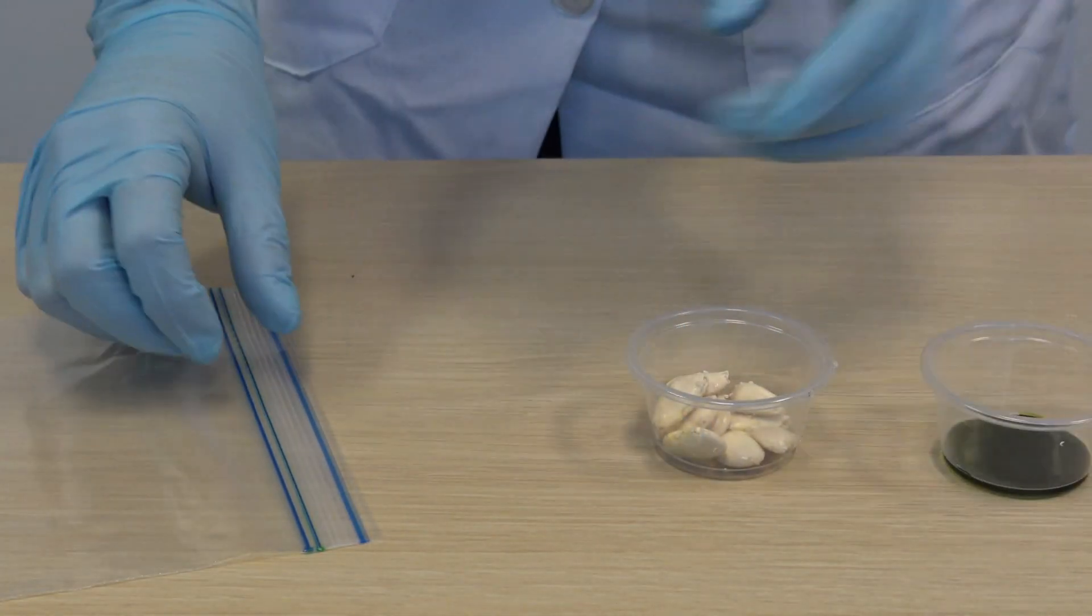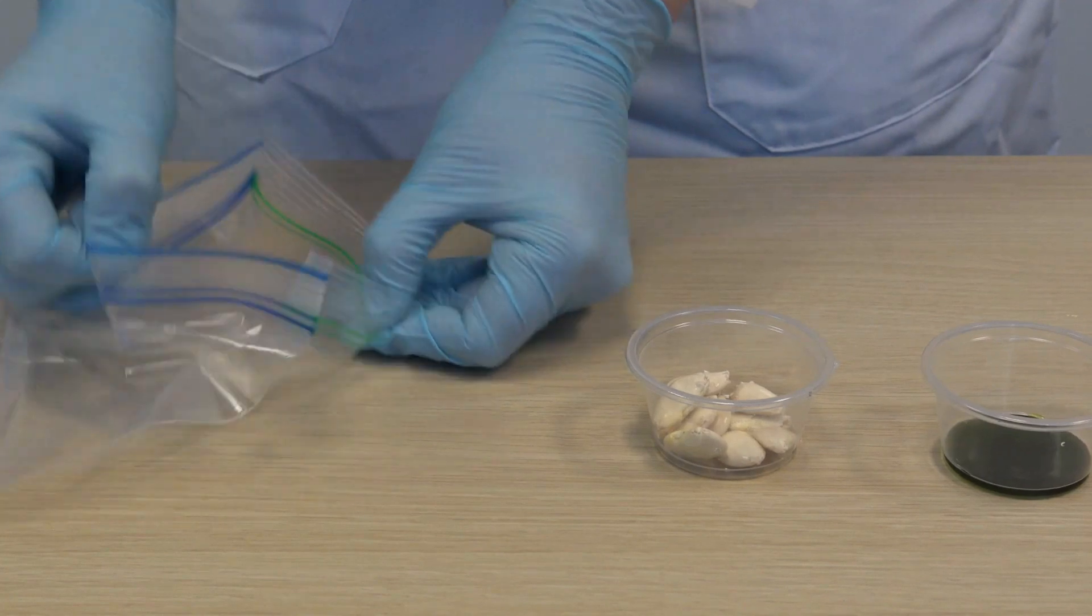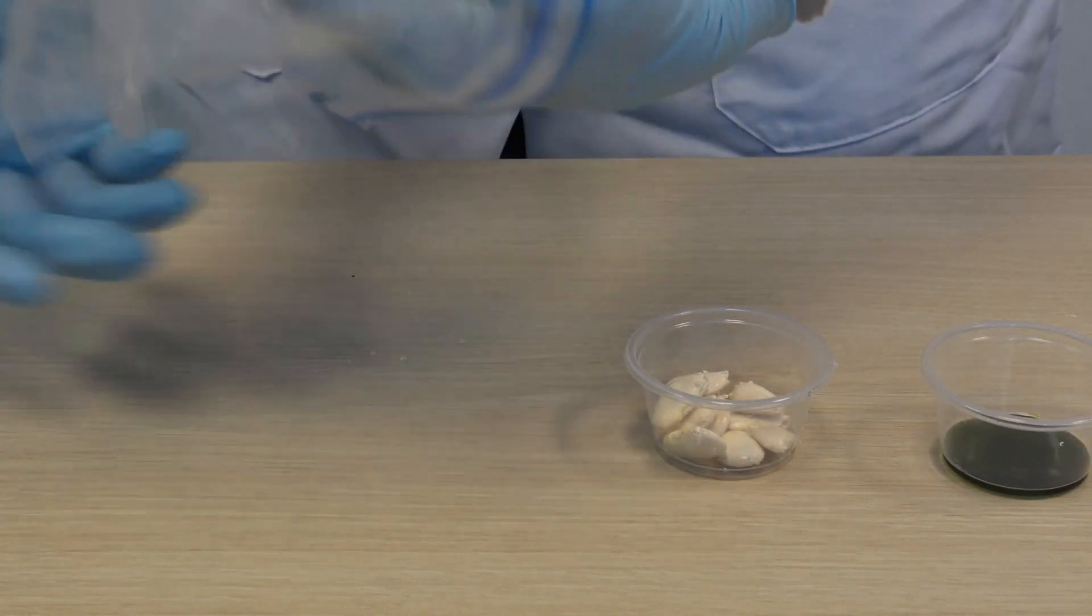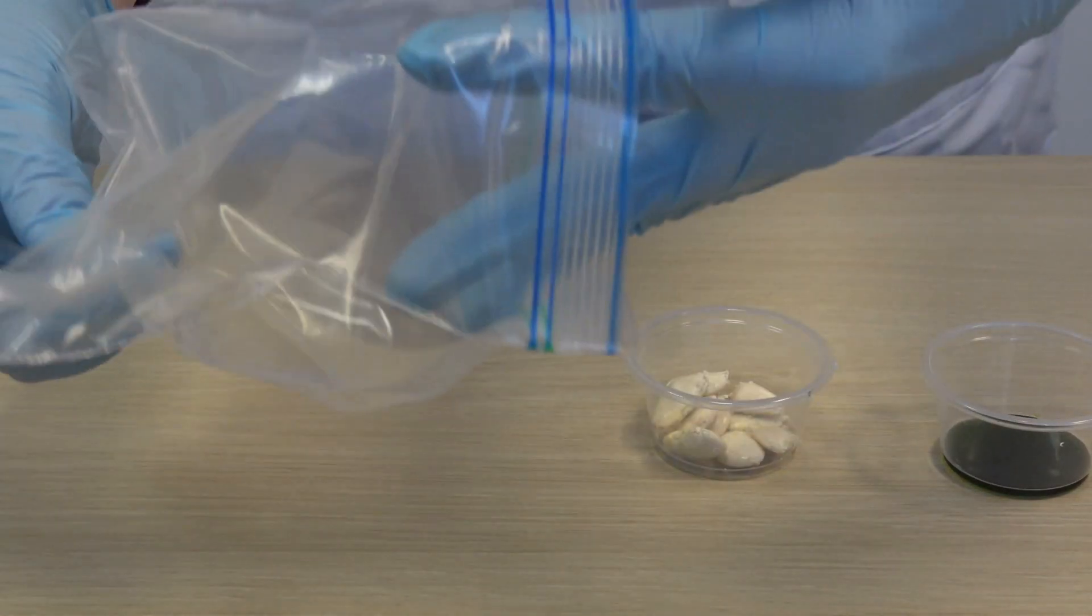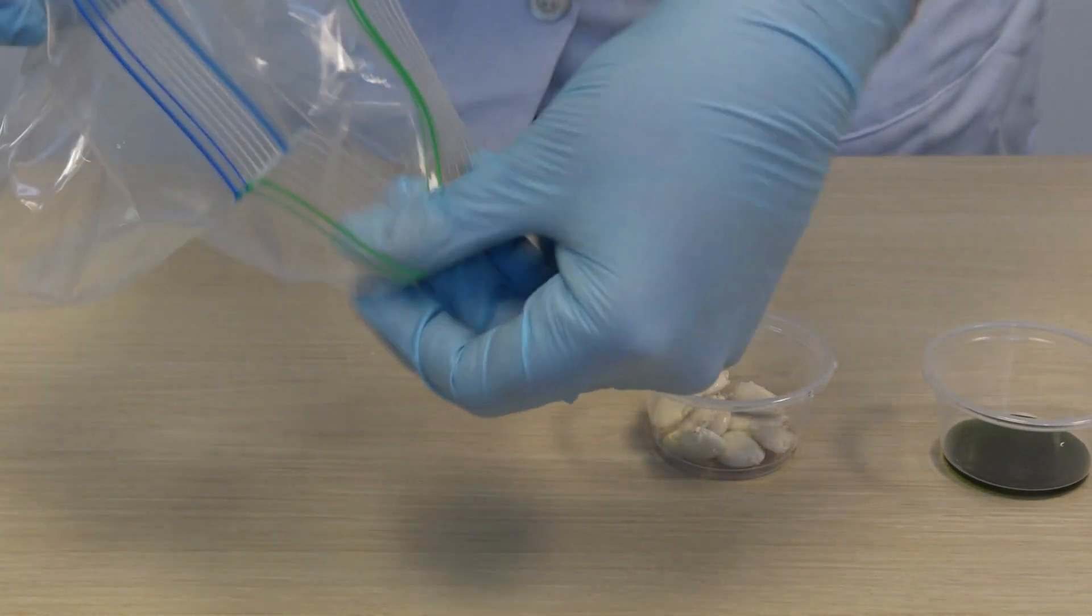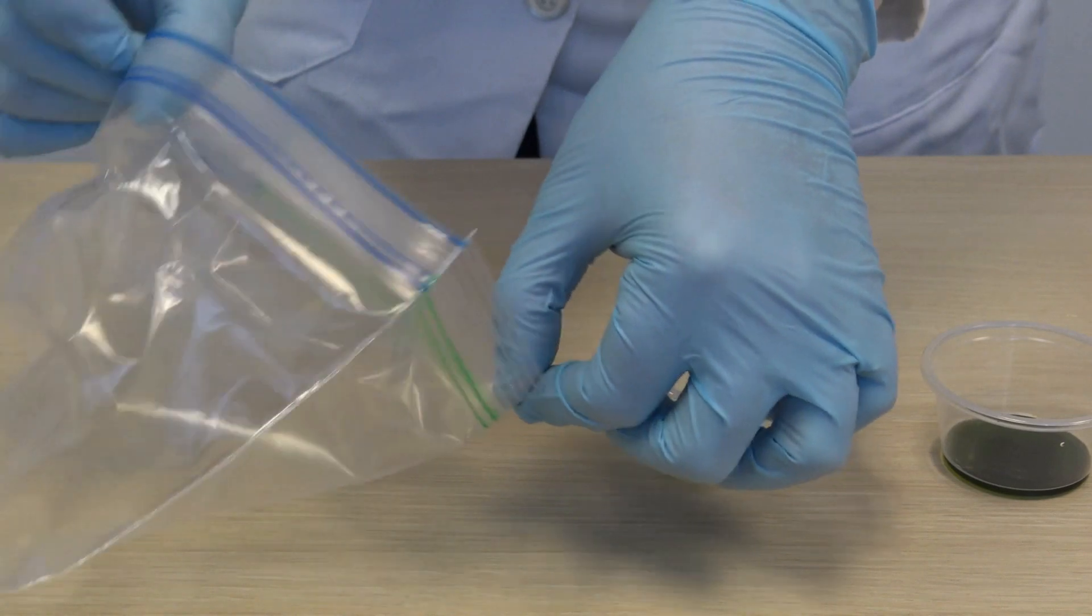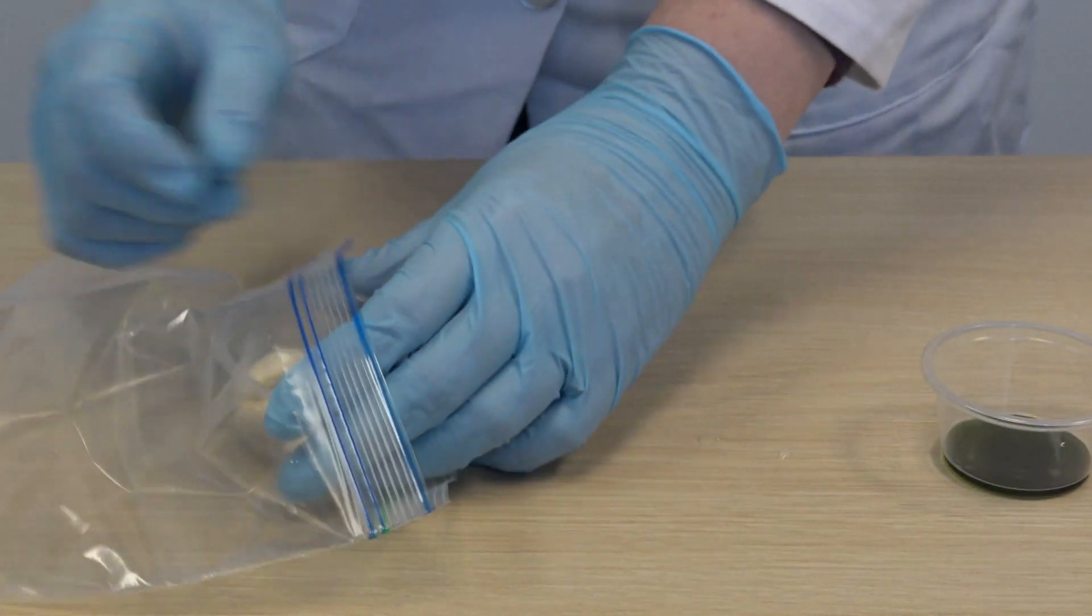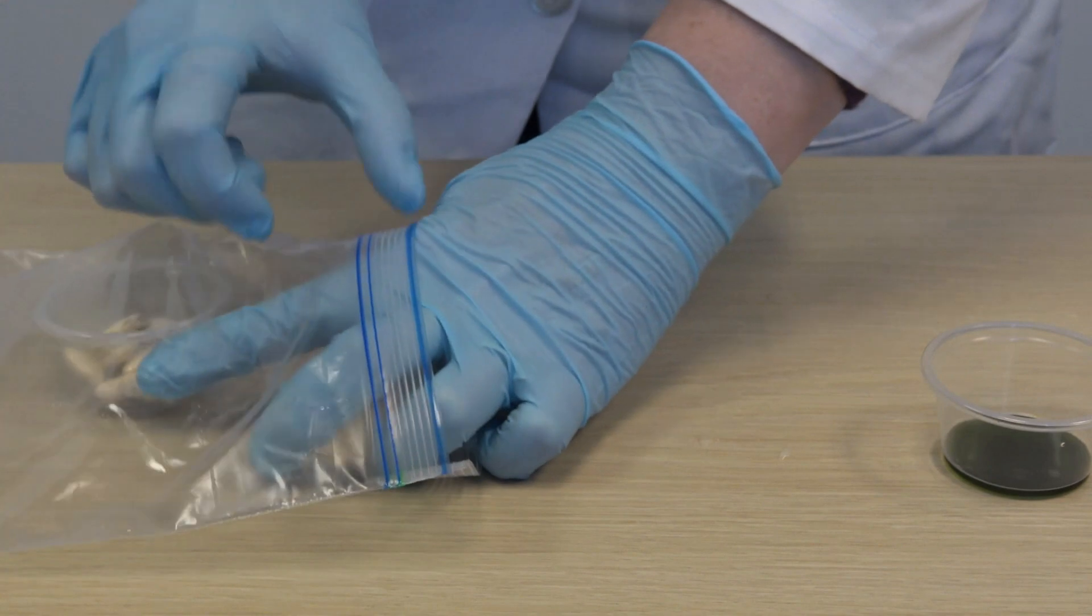A quick tip: when you put the condiment containers within the zip-top bags, make sure to open them up so there's air from the room within the bag. Then carefully place each condiment container in there, still making sure there's air from the room inside.